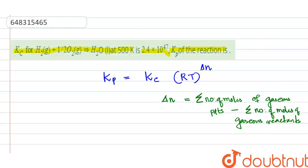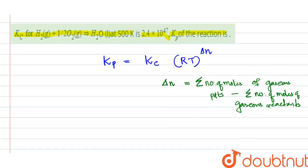So for this equation, delta n will be equal to: what is the total number of moles of gaseous products?